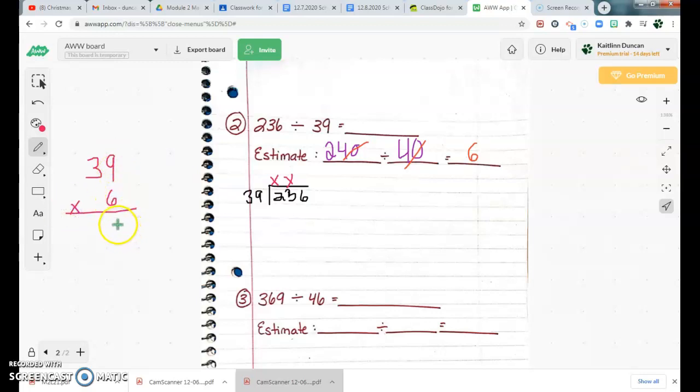Well, I know 6 times 9 is 54. 4 carry the 5. 6 times 3 is 15. I'm sorry, 6 times 3 is 18. 18 plus 5 is going to get me 23. Oh, so I have 234, which is awfully close to 236. It's the closest I can get without going over. So I'm going to say 39 can go into 236 at least 6 times. 6 times 39, I did that right over here. That's 234. So I'm going to subtract 234 from 236. 6 minus 4 is 2, and then everything else are 0s.